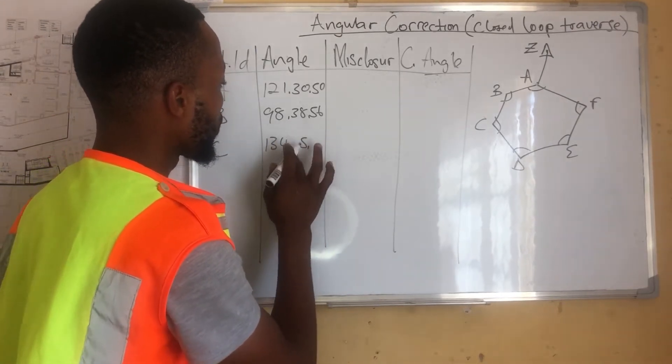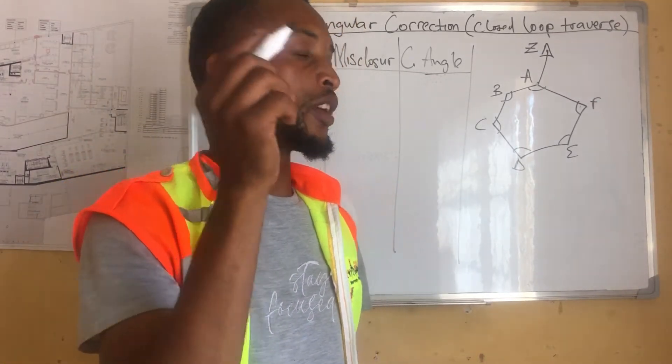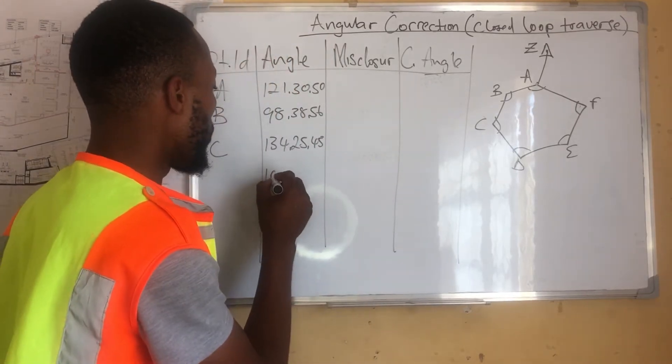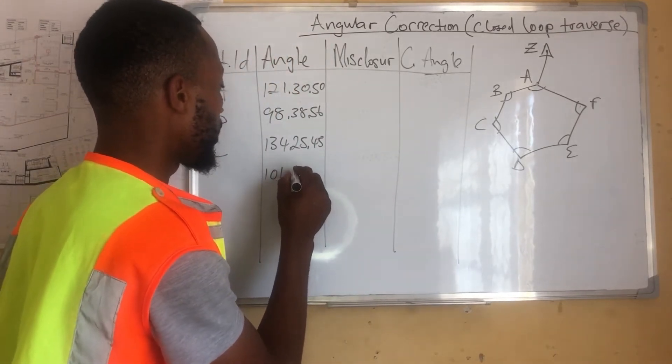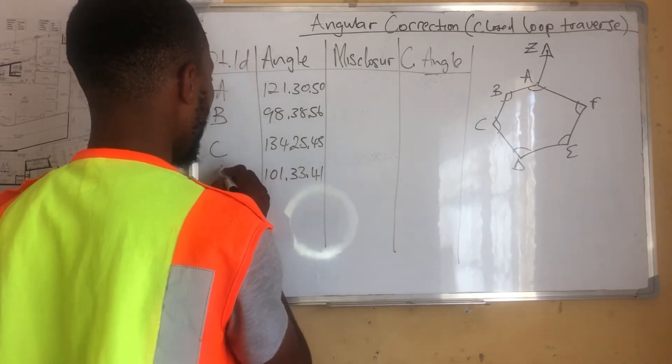Then for angle C, we have 134, 45, sorry, 25, 45. Like this. Then for angle D, we have 101, 33, 41. That's angle D.